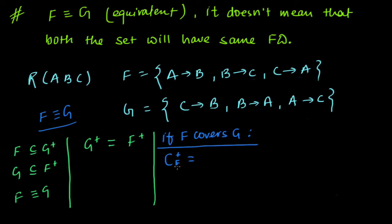To derive the first functional dependency 'c determines b', we find the closure of c using the functional dependencies in f. From c we can determine c, then from c we can determine a, and from a we can determine b. So the closure of c contains b, which means 'c determines b' can be derived from the given set of functional dependencies in f.